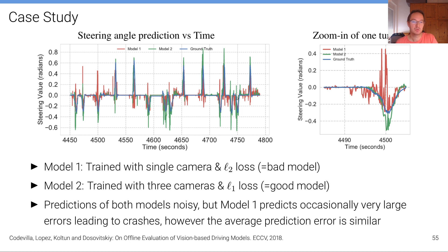What we can see from this plot here, and also from this zoom in here of one of these turns that you can see the turns are where the ground truth is peaking. So this is one of the turns zoomed in. What we can see is that both models are quite noisy, but model one, the red one, occasionally predicts very large errors.